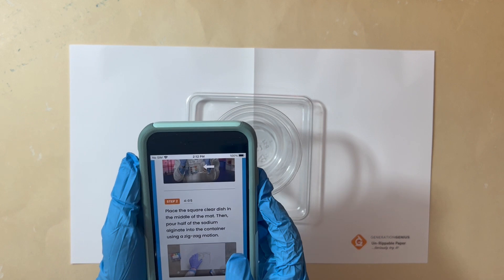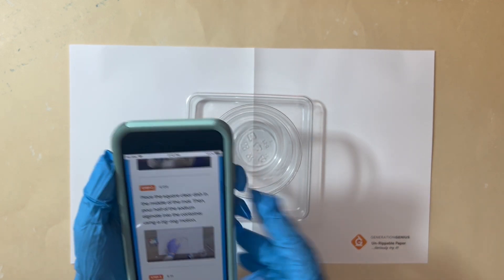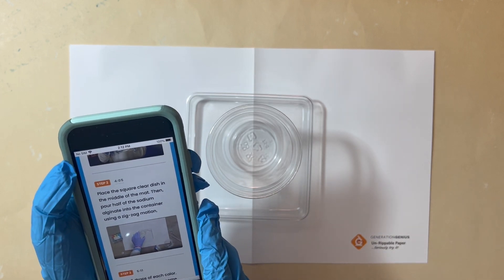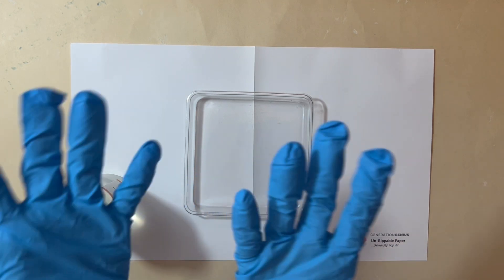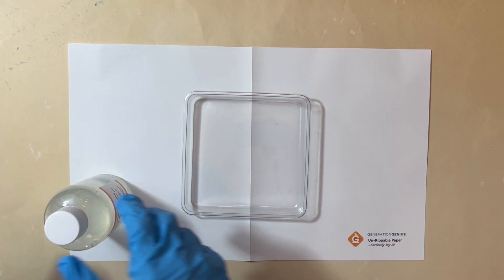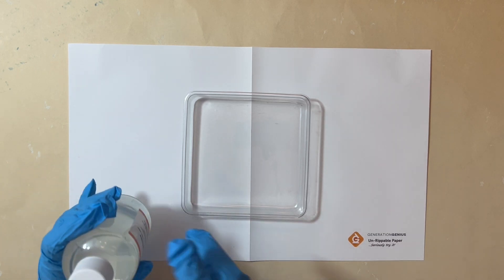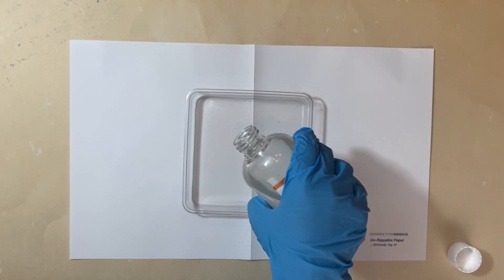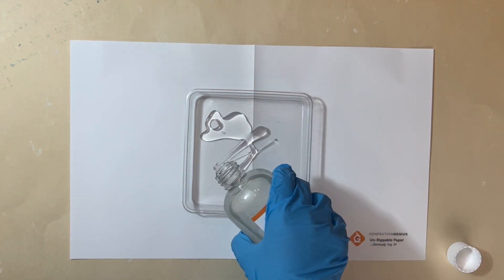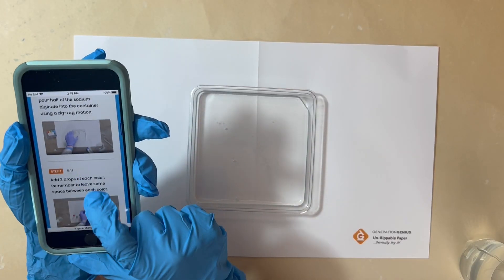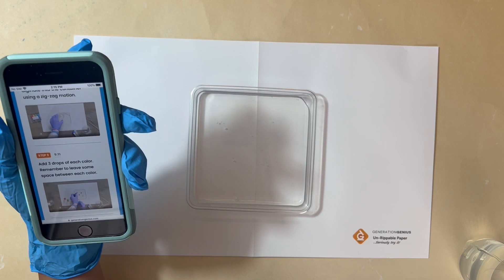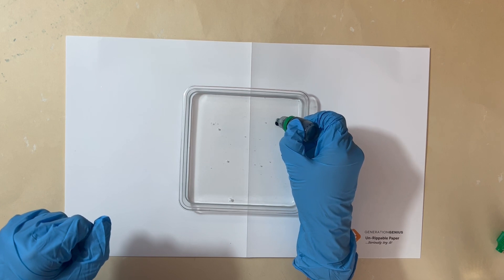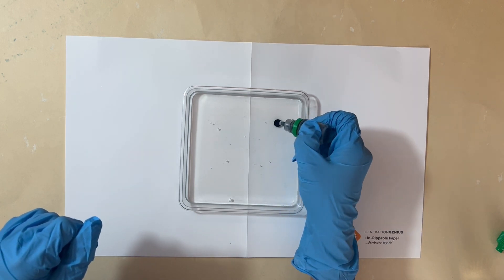So step one, it says pull out the bag with a big bottle in it. We forgot about the white mat, the unrippable paper. And then step two, it says place the square clear dish in the middle of the mat. Then pour half of the sodium alginate into the container using a zigzag motion. Remember, kids, wear gloves and glasses for your safety.